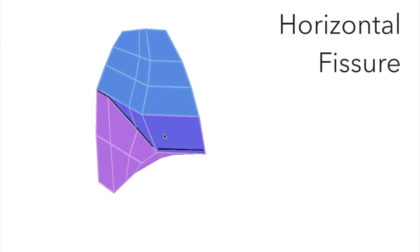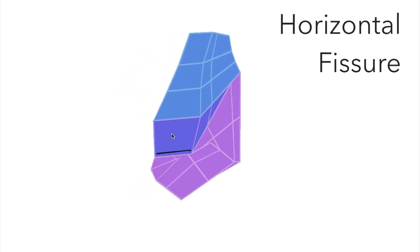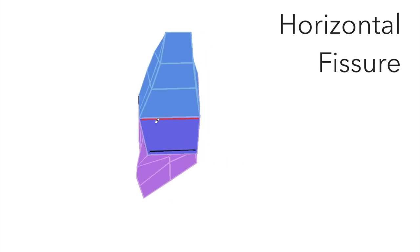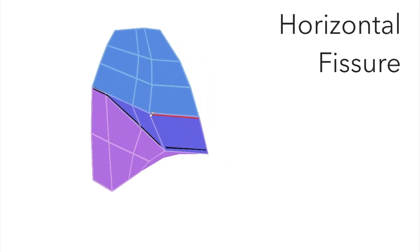The horizontal fissure separates the middle lobe from the upper lobe. So let's draw that one in too, fairly straight or horizontal around the front, and then it meets up with the oblique fissure around the side.